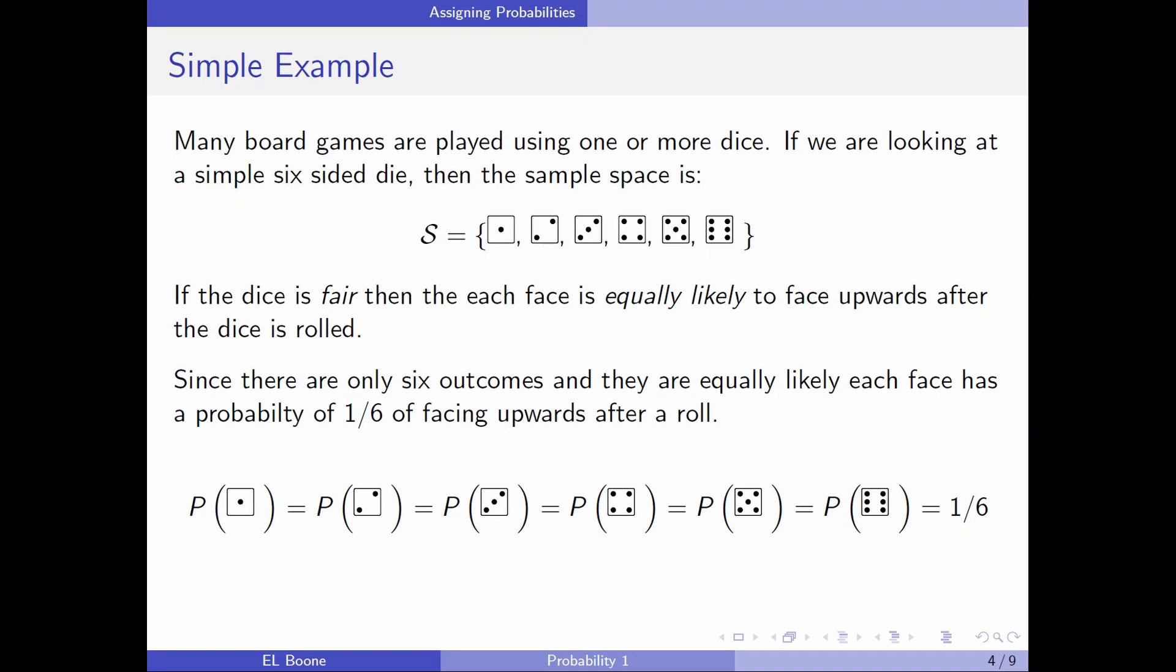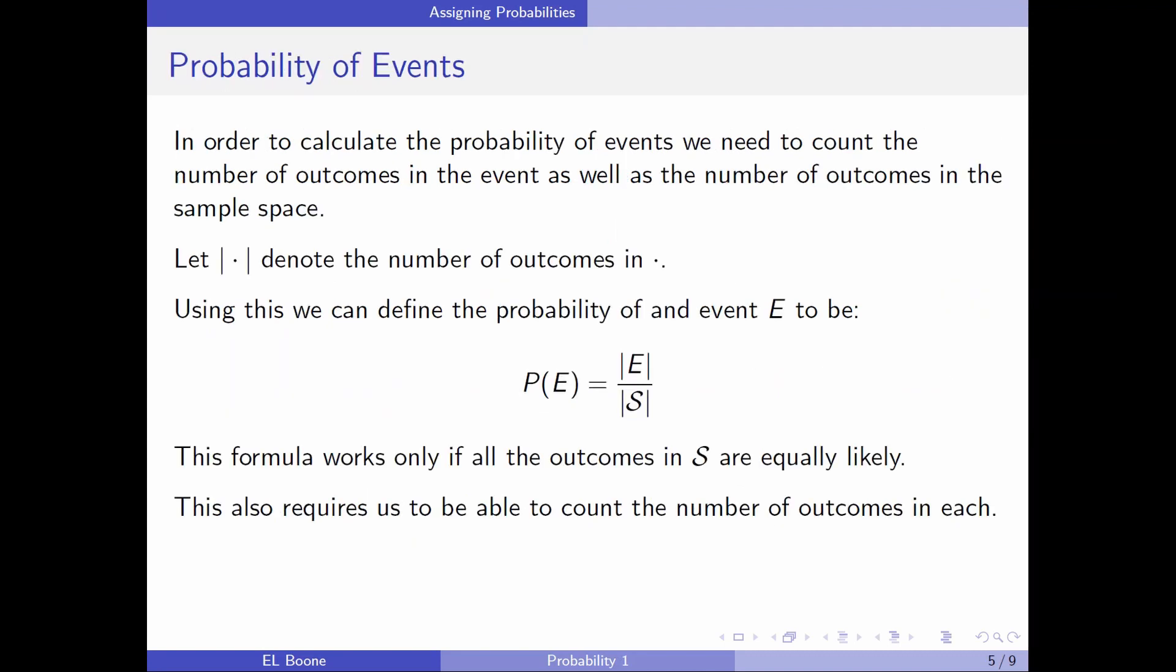Since there are only six outcomes and they're all equally likely, each face has a probability of one-sixth of facing upwards after a roll. So, the probability of one is equal to the probability of two, equal to the probability of three, equal to the probability of four, equal to the probability of five, equal to the probability of six. And all of these probabilities are equal to one-sixth. That's what equally likely means. They're all the same probability.